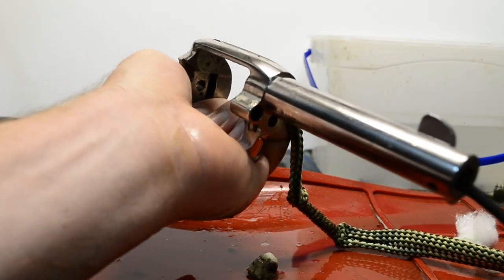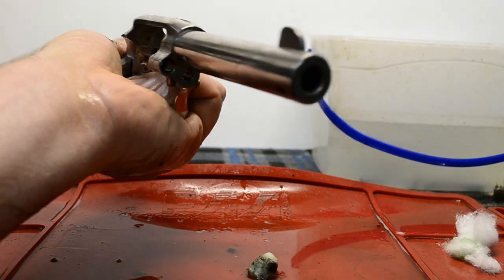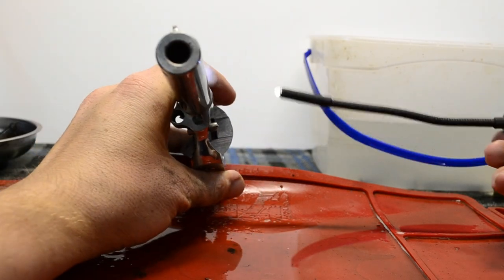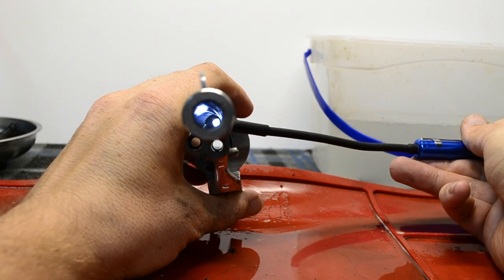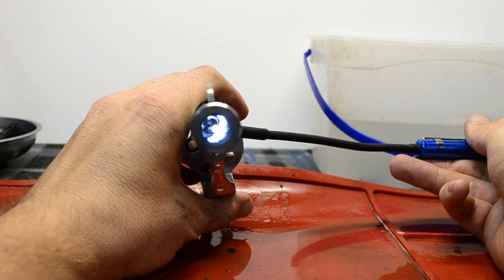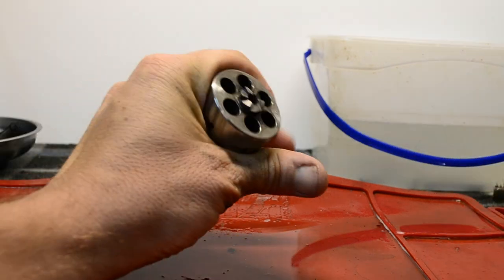If you do not have a bore snake, use cleaning patches and your cleaning rod instead. To ensure the bore is clean, shine a bore light from the breech and visibly inspect the bore. The bore should look something like this after you have cleaned it, with you being able to see the rifling in the barrel and no powder or grime.